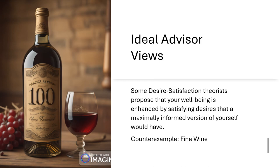Before getting to version D, I should mention that at this point in the literature, a lot of these views are called ideal advisor views. A really common kind of desire satisfaction theory proposes something like C but fleshes it out more. What they say is that your well-being is enhanced — your life gets better for you — by satisfying desires that a maximally informed version of yourself would have. Whatever that ideal advisor would desire, any fulfillment of those things actually makes your life better. It's a very interesting kind of view, a nice sort of twist. I myself don't think it works — I don't think it really saves the desire satisfaction view from some of its most clear counterexamples — but it's a very interesting and fairly common move.